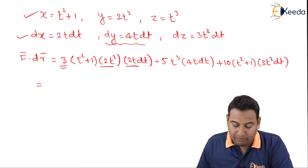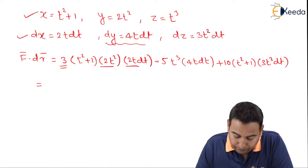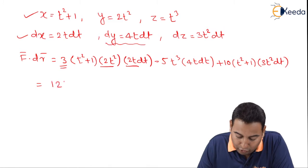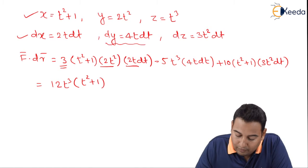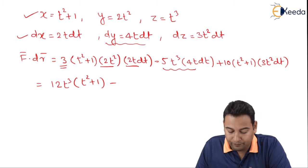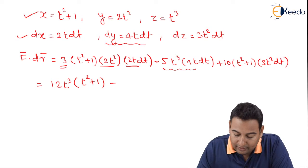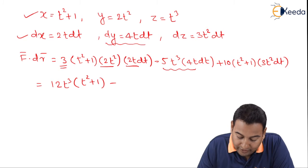We need to simplify this. Let me first simplify. This will be 12t cube inside will be t square plus 1. Minus this is single term, we can directly write it down. dt I'm taking common because dt is there in all the terms.